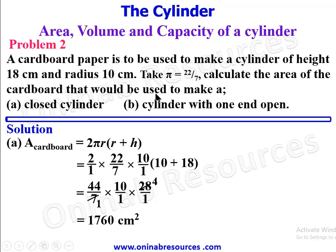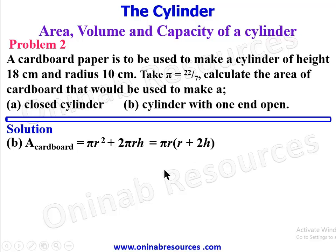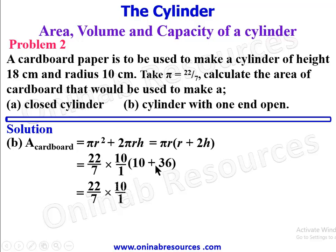For part b), a cylinder with one end open: one circular base plus the curved surface gives πr² + 2πrh, factorized as πr(r + 2h). Substituting: (22/7) × 10 × (10 + 36), since 2h = 2 × 18 = 36. This gives (22/7) × 10 × 46.